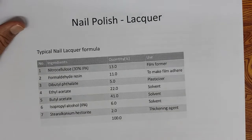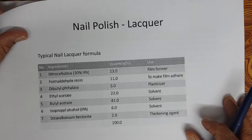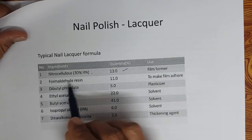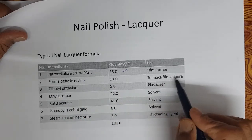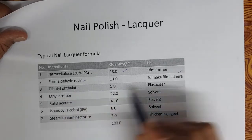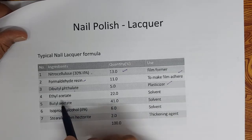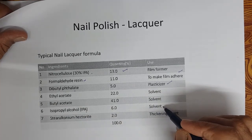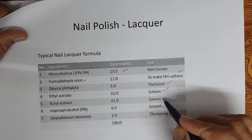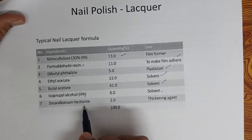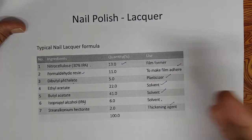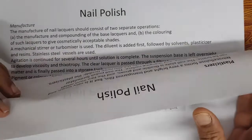A typical lacquer formula contains: nitrocellulose as the film former, formaldehyde resin to make the film adhere, dibutyl phthalate as a plasticizer, ethyl acetate and butyl acetate as solvents, isopropyl alcohol as a co-solvent, and stearalkonium hectorite as a thickening agent.